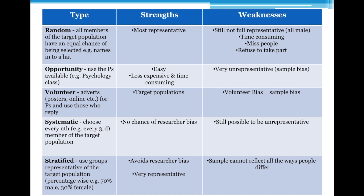Those are the five different sampling methods. You're unlikely to simply be asked 'what is random sampling?' — that's AO1. You could get asked it, but from experience of exam papers, you're less likely to. Much more likely is AO2, where you identify which sampling method has been used in a hypothetical study, or AO3, where you need to know the strengths and weaknesses of these different sampling methods.